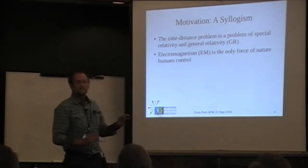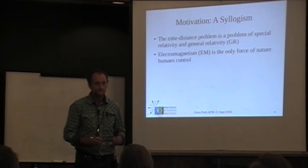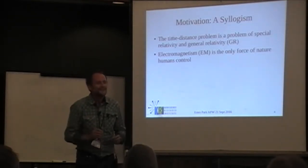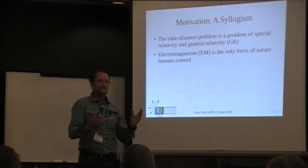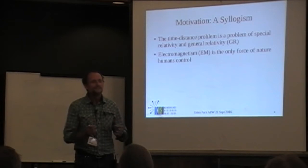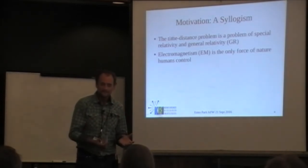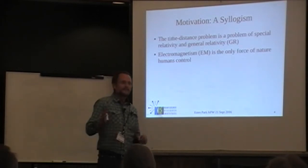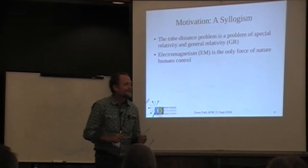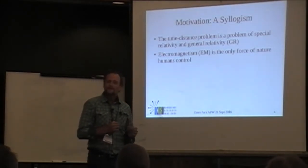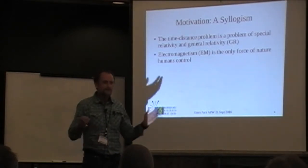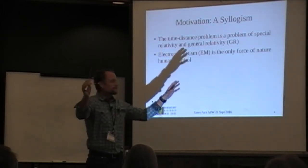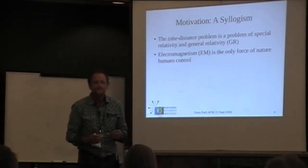Electromagnetism is the only force of nature that humans control, that we do engineering with. What about nuclear reactors? That is the strong or weak force, but we don't really engineer with it - we can make heat and boil water, but that's about it. Everything else we do is electromagnetic. All atoms in our bodies are electromagnetic; chemistry, metallurgy, power generation, communications, and the surfaces of all the planets are all electromagnetic.